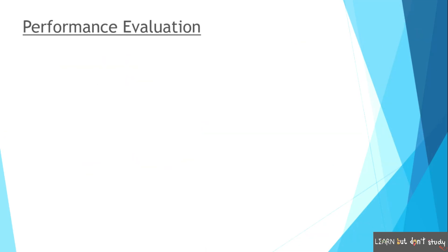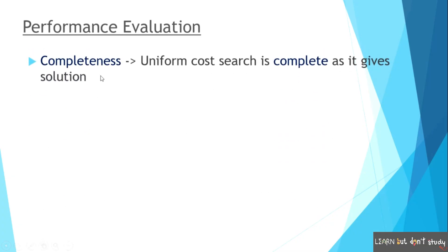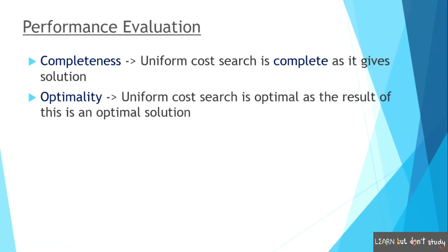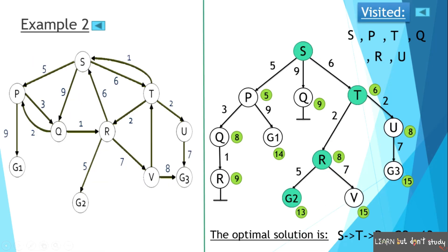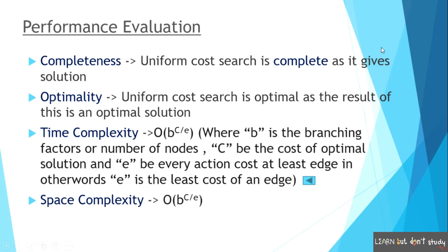Now let's look at the performance evaluation. First, completeness — the Uniform Cost Search is complete, so this is a complete solution. Next, optimality — the Uniform Cost Search is optimal; if we can get the answer, we will say it is the optimal solution. The time complexity formula is O(b^(C*/ε)), where b is the branching factor, C* is the optimal solution cost, and ε is the step cost. The space complexity formula is the same as time complexity — O(b^(C*/ε)). This is the Uniform Cost Search uninformed search strategy.